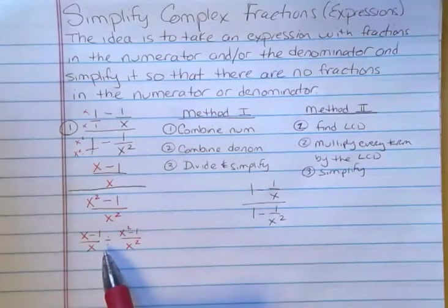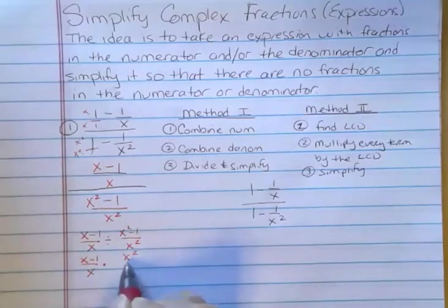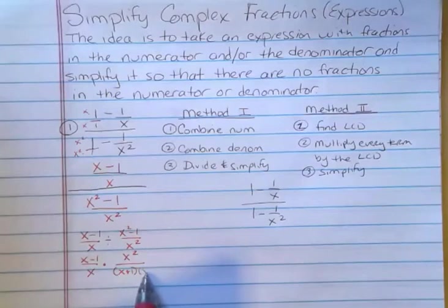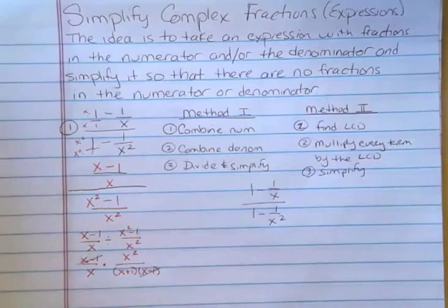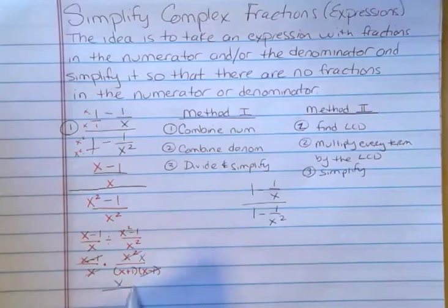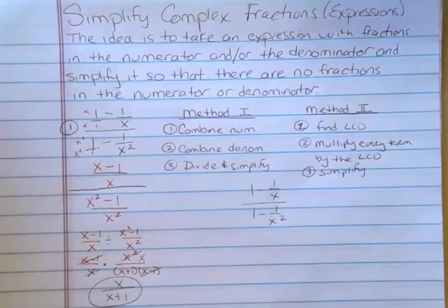To finish dividing, I flip: x minus 1 over x times x squared goes to the top because I'm flipping since I'm dividing. And x squared minus 1, I'm going to go ahead and factor that — that's going to be x plus 1 and x minus 1. Now I want to simplify by striking out like terms. I have x minus 1 that cancels, and x up here cancels one of the x squareds, leaving one behind. So what I have is x on the top and x plus 1 in the denominator. Now I don't have a complex fraction, because there are no fractions in the numerator or the denominator — just a straightforward fraction.